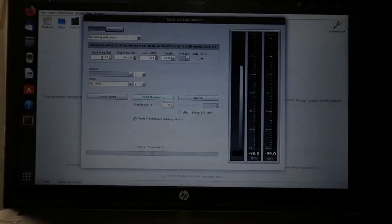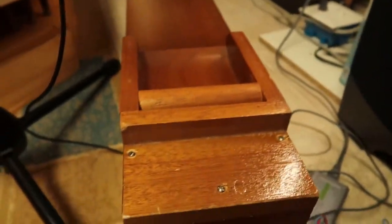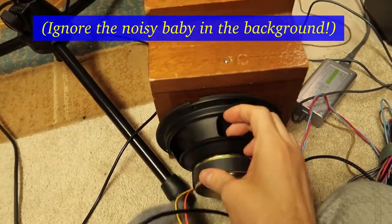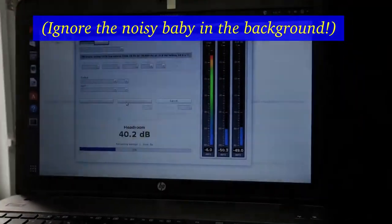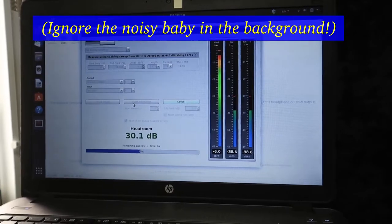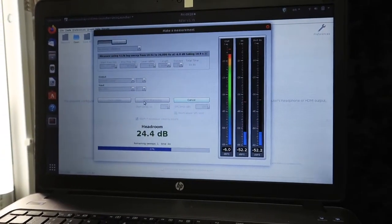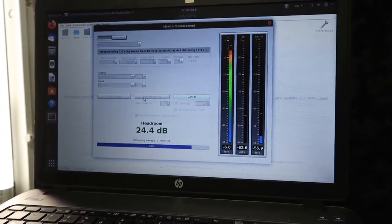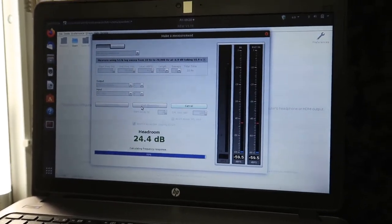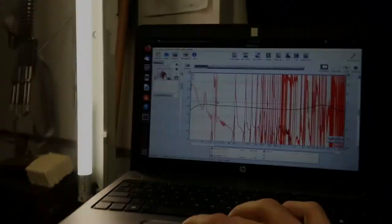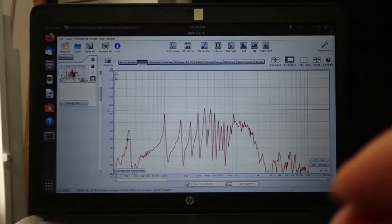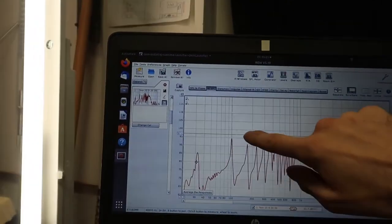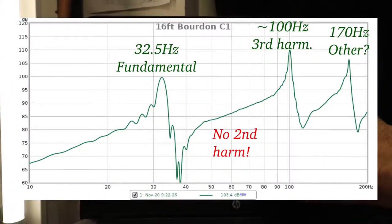All right, we're going to use REW here to measure the frequency spectrum produced by this pipe. As expected, you've got quite a bit of resonant peaks, 32 hertz, the third harmonic...